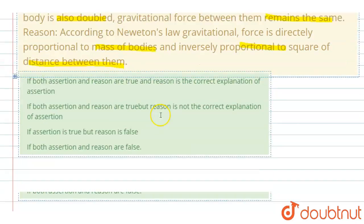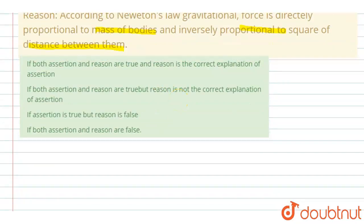So, these both are correct, right? So, let us see how. Let us say we have two bodies of mass M1 and M2. So, the force and distance between them is G or D. So, the force between them will be G M1 M2 upon D square.